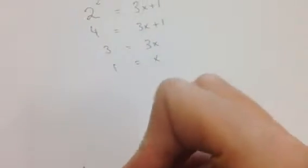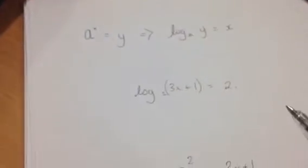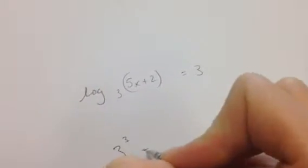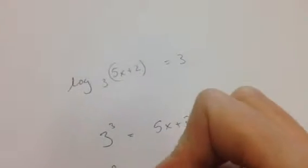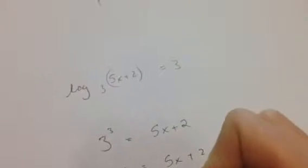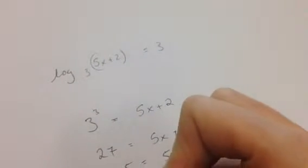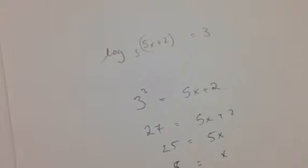Similarly, if we had log of 5x plus 2 in base 3 is equal to 3, I can use the same rule to carefully come out of log format. When I do, I get 3 to the power of 3 equals 5x plus 2. Using algebra to work that out, I end up with x is equal to 5.